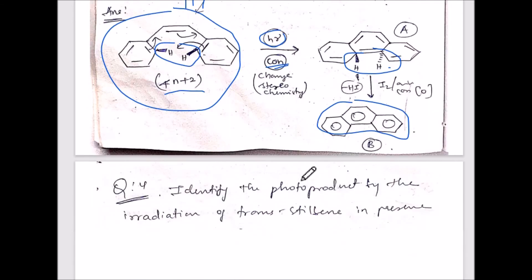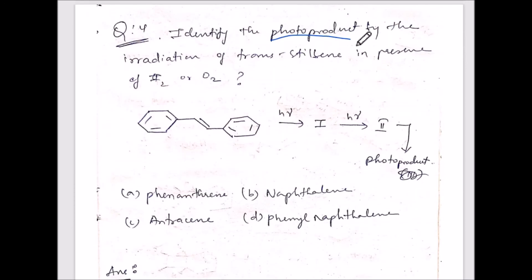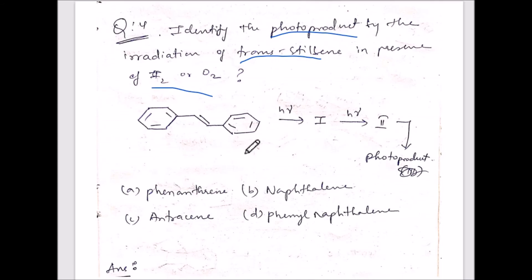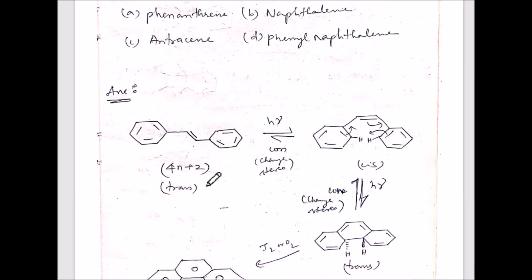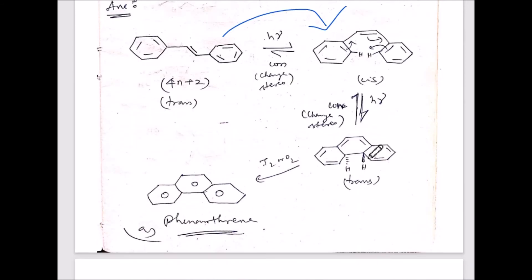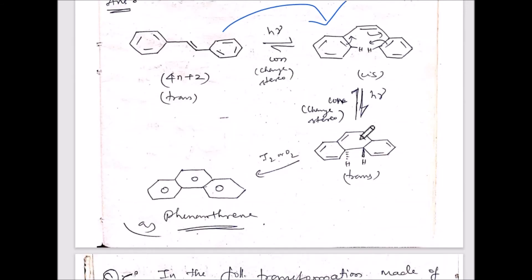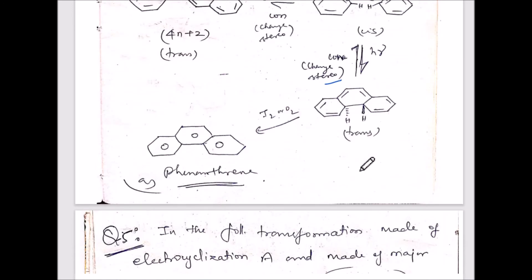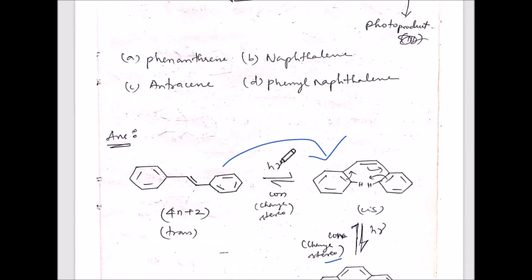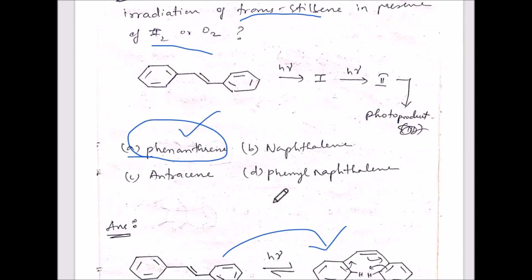After forming the trans ring-closed product A, oxidation with I2 or O2 removes the hydrogens, giving compound B — phenanthrene. For question four, trans-stilbene under photochemical irradiation: 4n+2 system, photochemical gives con rotation — change stereochemistry from trans to cis — then add I2 or O2 and you again get phenanthrene.